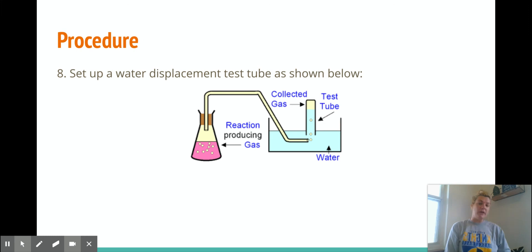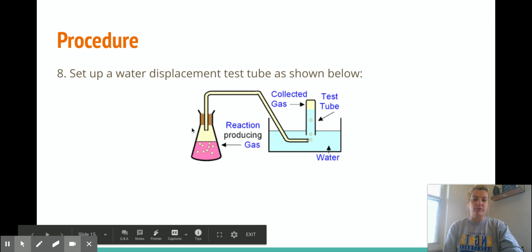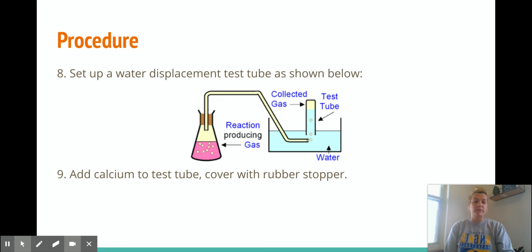The second part of the procedure is calcium. So the first thing that you're going to see is a water displacement test tube as shown before. So what's going to happen here is we're going to react the calcium with water here, and the gas that forms is going to go up through this tube into the water. And what's going to happen is the gas is going to go up and push water out, and you'll start to see them separate. And what is in the test tube is the gas that's actually being produced over here. And then we're going to add calcium to the test tube, cover with a rubber stopper, and then record observations.